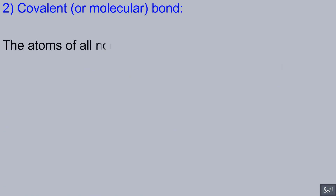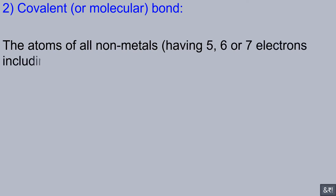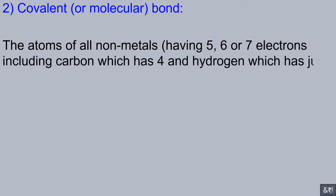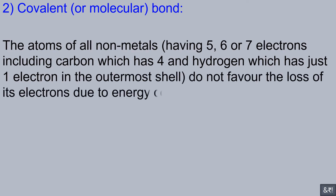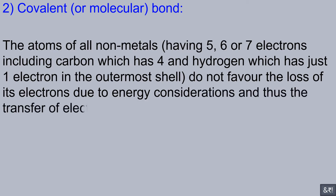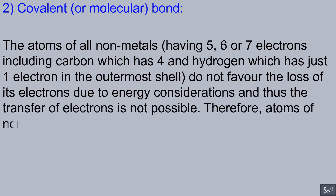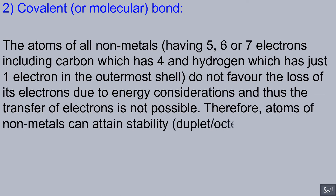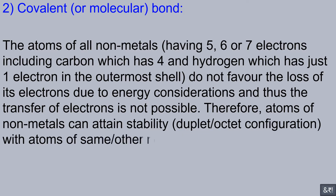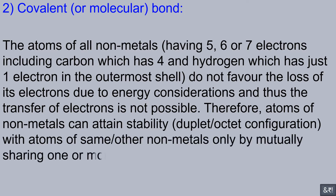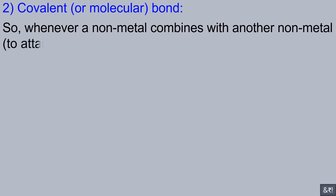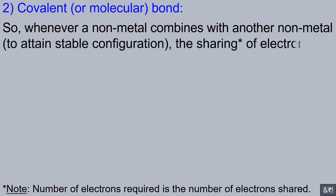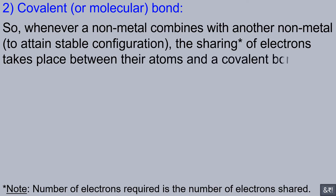The atoms of all non-metals — having five, six, or seven electrons, including carbon which has four and hydrogen which has just one electron in the outermost shell — do not favor the loss of electrons due to energy considerations, and thus the transfer of electrons is not possible. Therefore, atoms of non-metals can attain stability — duplet or octet configuration — with atoms of the same or other non-metals only by mutually sharing one or more pairs of electrons. Whenever a non-metal combines with another non-metal to attain stable configuration, the sharing of electrons takes place and a covalent bond is formed.